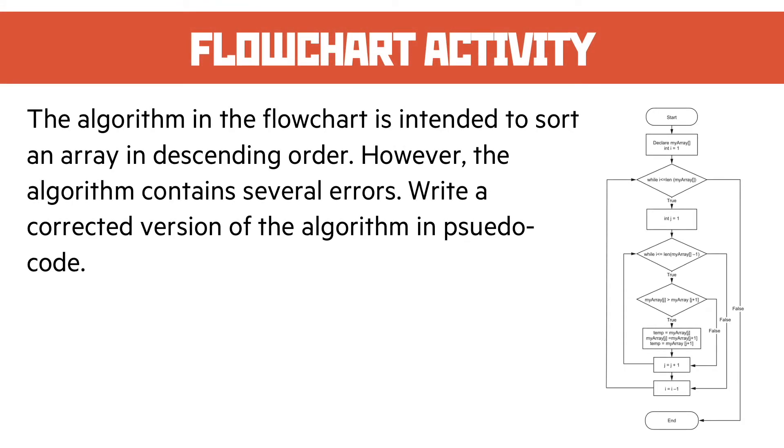Our first activity is to rewrite this algorithmic flowchart, which is meant to sort an array in descending order, but make it a pseudocode example. I've actually taken this activity from past paper questions because I think this is a really useful question. They've also put a couple of errors in it and we'll just spot those as we go.